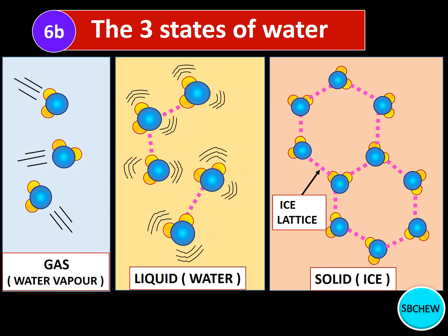Let us look at the three states of water: the gaseous state, the liquid state, and the solid state. In the gaseous state, water forms water vapor, and the molecules have the most kinetic energy of the three states — they move very fast and don't form any hydrogen bonds between themselves. In the liquid state, the molecules have less kinetic energy, they vibrate, and they form hydrogen bonds between each other.